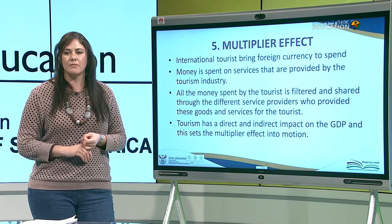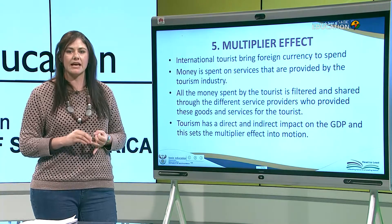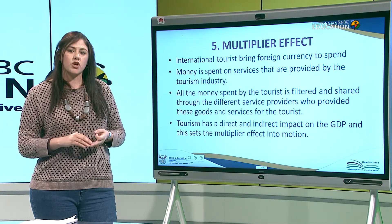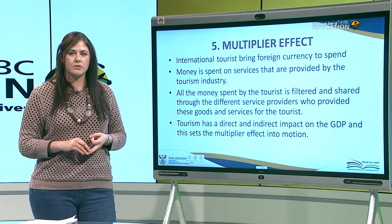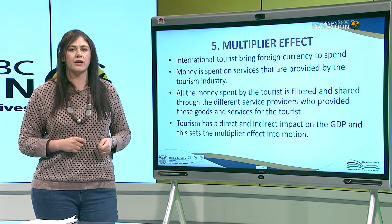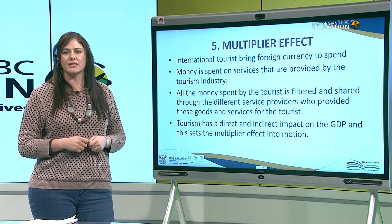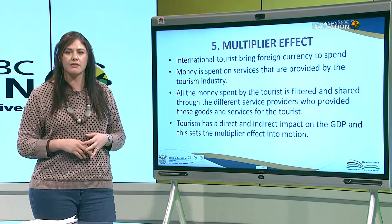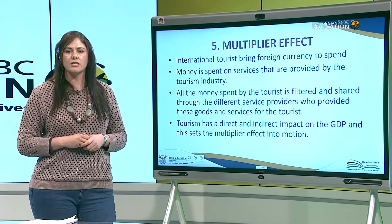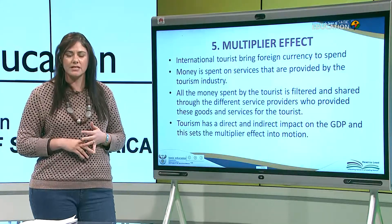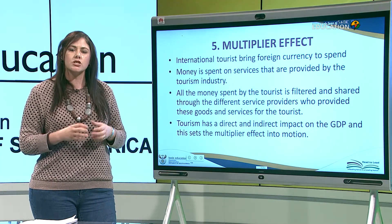Money is spent on services provided by the tourism industry — for example, accommodation establishments such as hotels and guest houses; transport such as water, rail, road, air, and extraordinary modes; activities such as bungee jumping, hiking, skydiving, and game drives; and attractions such as Gold Reef City, Sun City, Kruger National Park, and Table Mountain.